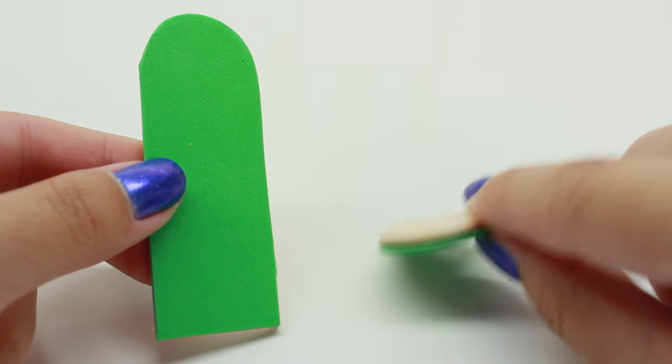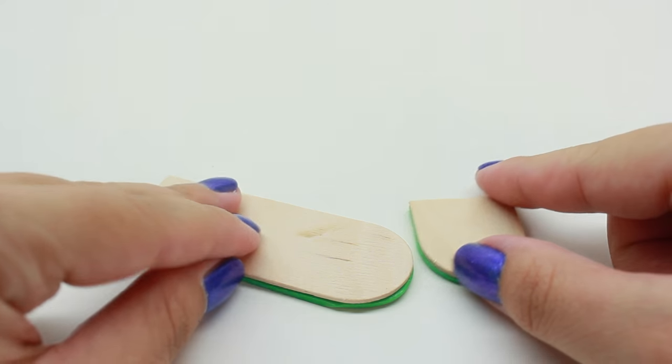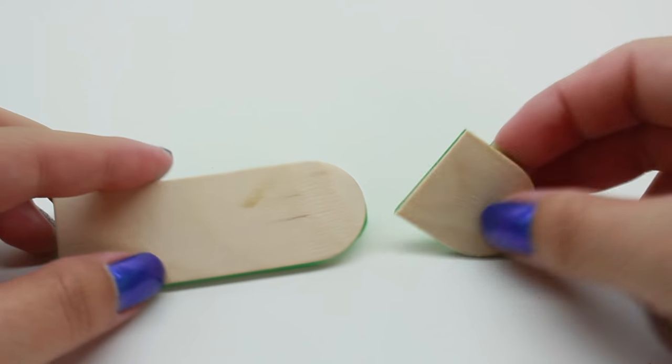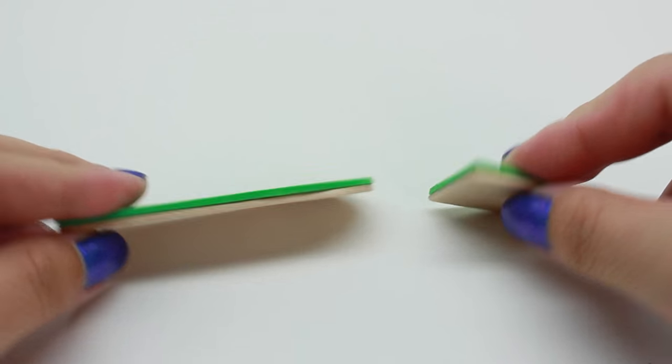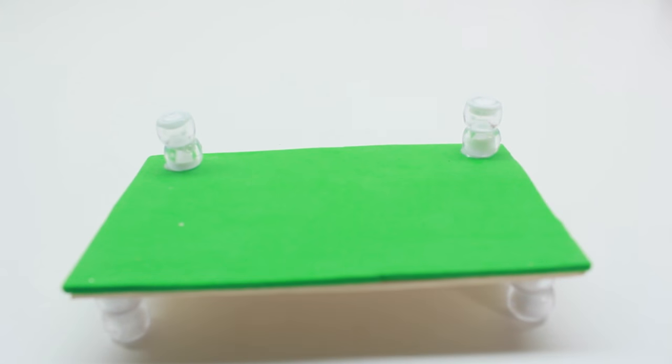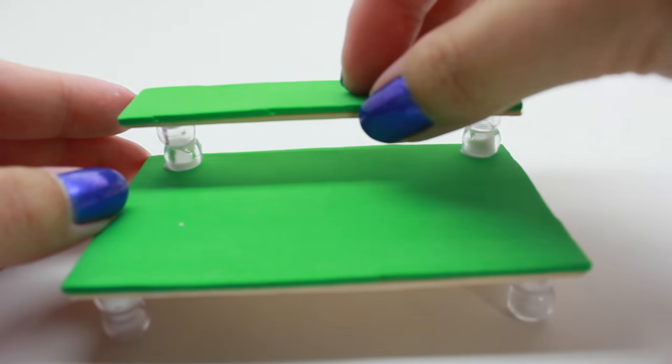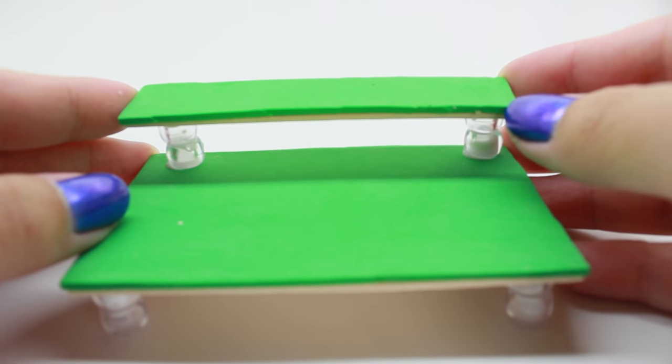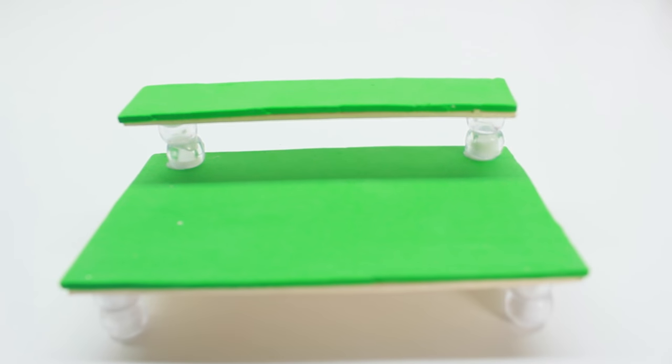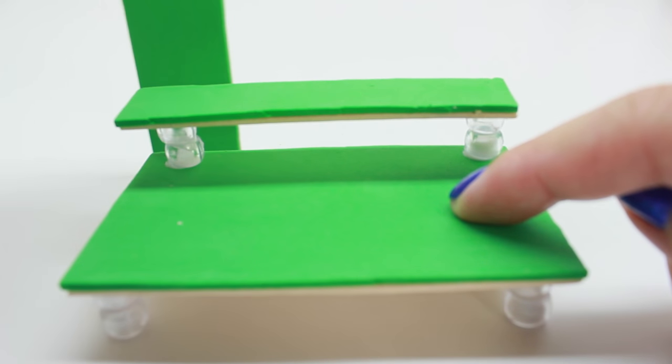Now we're going to start gluing. Glue the piece that you cut out earlier on top of the beads, and then take the long rounded piece that you just cut out and we're going to glue that to the back.